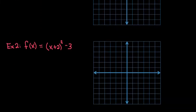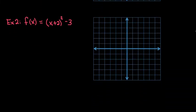For the second example, with this one, if you notice that we have (x+2)² - 3. This time, because we always do the opposite on the inside, this one is going to tell us to go left 2, and this one is going to tell us to go down 3.